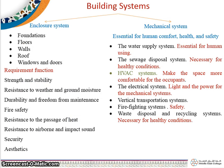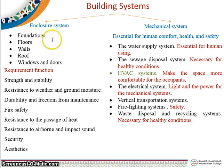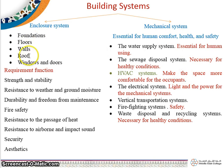We are having building systems of two types. One is Enclosure System and another one is Mechanical System. Enclosure System means which is closed or surrounded by some other areas. Foundation, Floors, Walls, Roofs, Windows and Doors are Enclosure Systems.